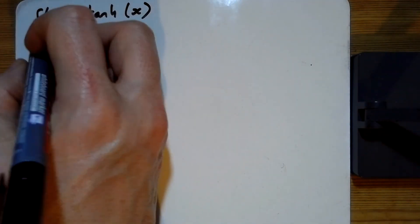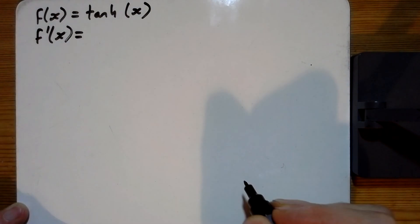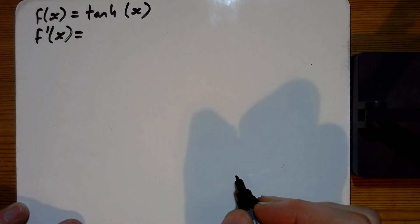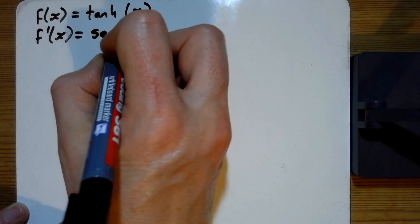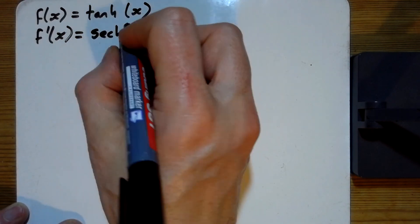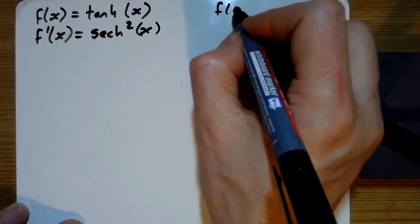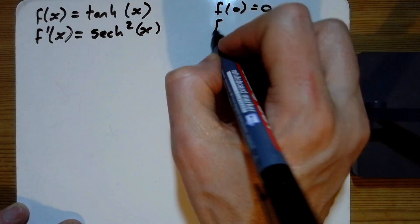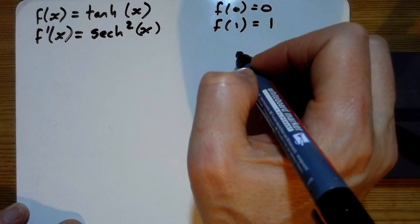So we've done the sinh and the cosh, now we're going to do the tanh. Differentiation's not going to be easy this time, is it? So tanh differentiates to give sech squared x. So that one's actually 0, so this is the first one that we've got. f of 1, that does give 1.